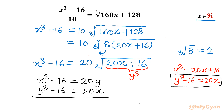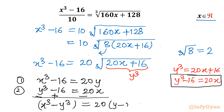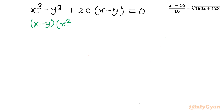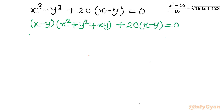And the second equation from the substitution is y³ - 16 = 20x. Let us subtract the second equation from the first one, with change of sign. This gives us x³ - y³ = 20(y - x). Bringing all terms to one side: x³ - y³ + 20(x - y) = 0. Applying the a³ - b³ formula, we get (x - y)(x² + y² + xy) + 20(x - y) = 0.